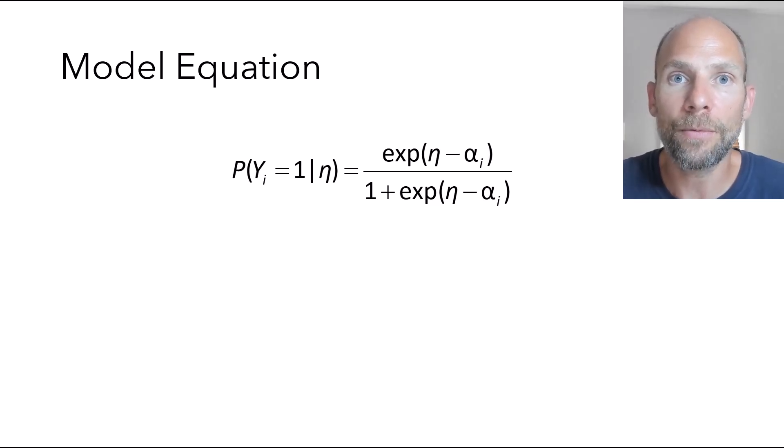On the left-hand side of the equation, you have the conditional probability that an item will be scored as one, so that an item will be solved or that a person will say yes to an item given the latent trait variable eta. And that probability in the model is a function of the latent trait score eta and the item difficulty alpha i.